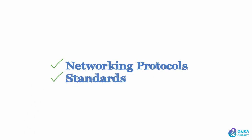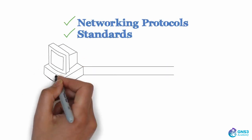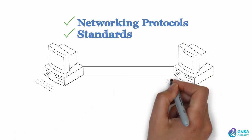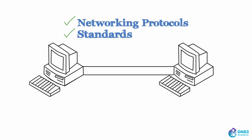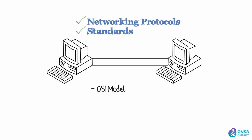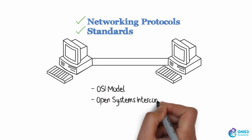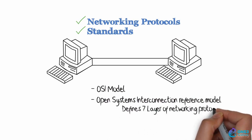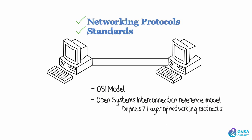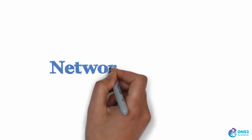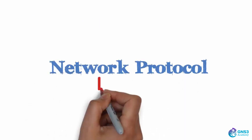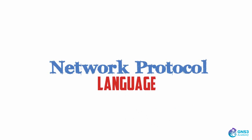In networking, there are many types of networking protocols and standards to ensure that computers can effectively communicate with other devices, whether right next to them or on the other side of the world. Later in this course, you'll learn about the OSI model, or Open Systems Interconnection Reference Model, which defines seven layers of networking protocols. Simply understand that a network protocol is essentially a language that governs the communications between networking devices.